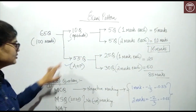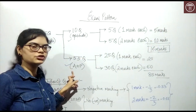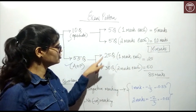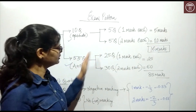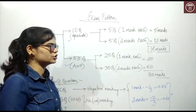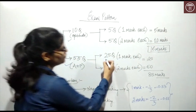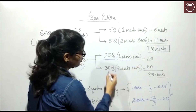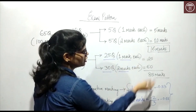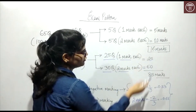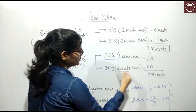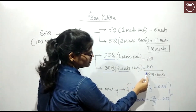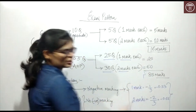Next, 55 questions from the architecture and planning syllabus. These are divided into 25 questions and 30 questions. 25 questions will be 1 mark each and 30 questions will be 2 marks each, totaling 25 marks and 60 marks respectively. So it's a total of 85 marks from architecture and planning.